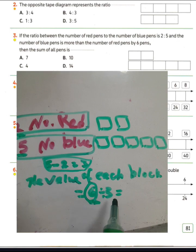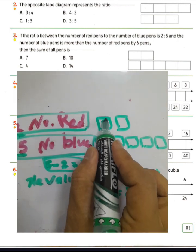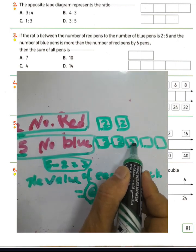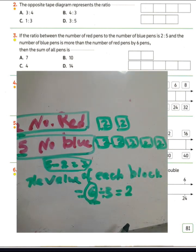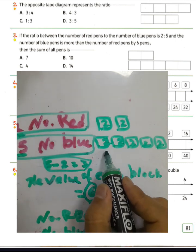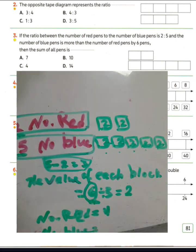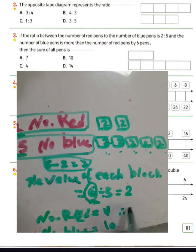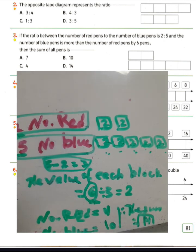The value of each block is 2. We want to find the sum of all beans. The number of red beans equals 2 plus 2 equals 4. The number of blue beans equals 2 times 5 equals 10. The sum equals 4 plus 10 equals 14.